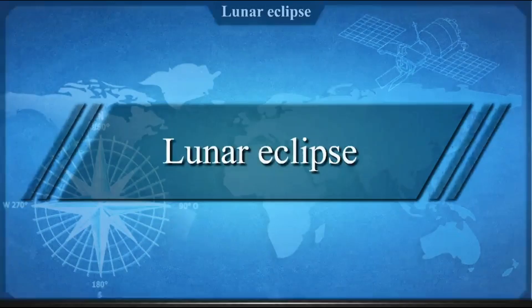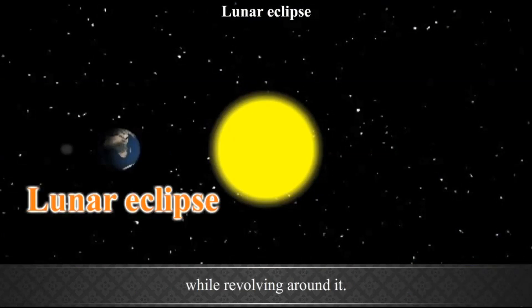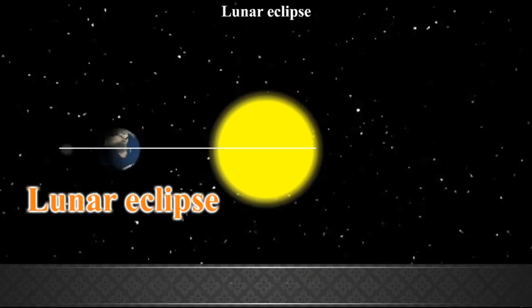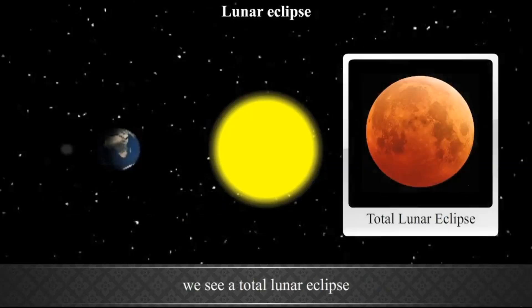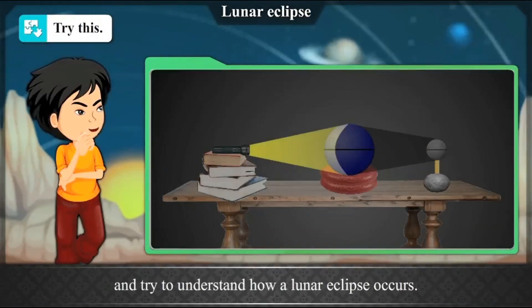Lunar Eclipse. A lunar eclipse occurs when the Moon enters the shadow of the Earth while revolving around it. At this time, it is necessary that the Earth is between the Sun and the Moon and all three of them are in the same plane. On a full Moon day, the Moon's path of revolution passes through the thick shadow of the Earth. If the Moon is totally hidden within the shadow, we see a total lunar eclipse. And if only a part of the Moon is in the shadow, we see a partial lunar eclipse. Try this. Arrange the materials used for the solar eclipse demonstration earlier and try to understand how a lunar eclipse occurs.